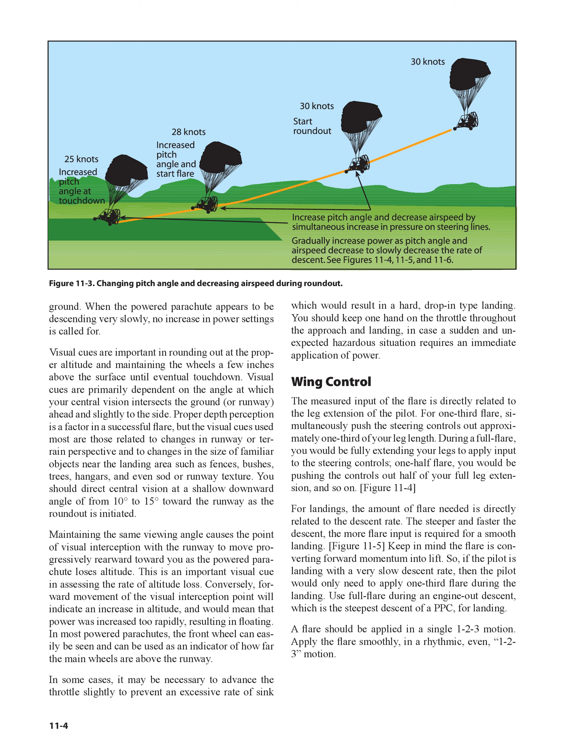In most powered parachutes, the front wheel can easily be seen and can be used as an indicator of how far the main wheels are above the runway. In some cases, it may be necessary to advance the throttle slightly to prevent an excessive rate of sink, which would result in a hard, drop-in type landing. You should keep one hand on the throttle throughout the approach and landing, in case a sudden and unexpected hazardous situation requires an immediate application of power.